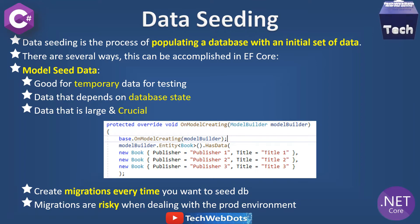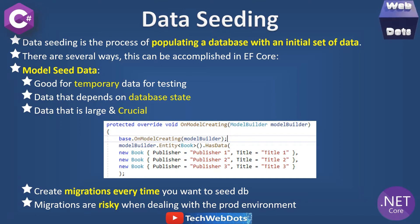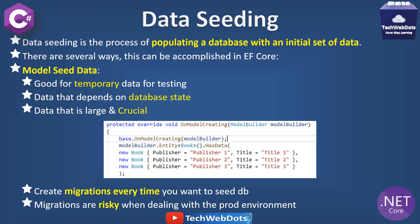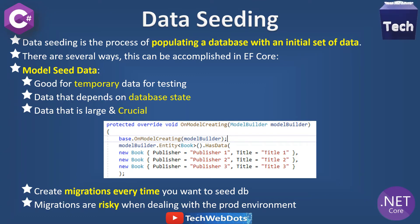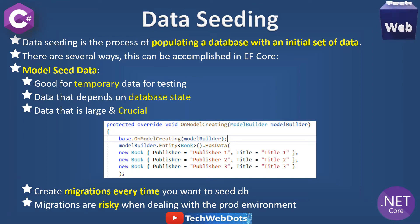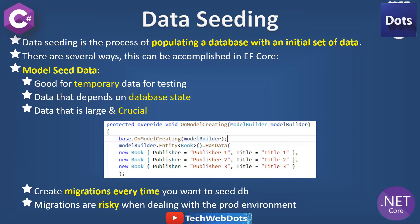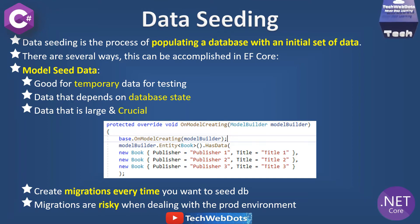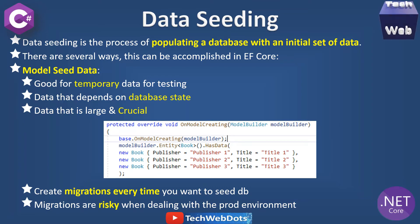In this we are passing three book objects that we want to use in our database for seeding. The drawback of this approach is that every time you make any changes in your model, you have to create a migration because you want to seed the database every time. Migrations are always risky when you are dealing with the production environment, so keep these two points in mind before using model seed data.